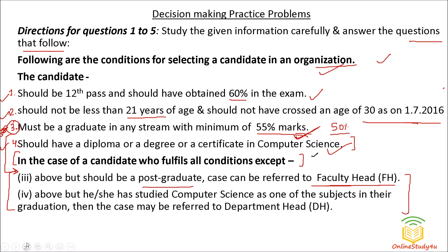Now, suppose a candidate satisfies conditions one, two, and three, but does not have a degree or certificate in computer science — that is condition four. However, if they studied computer science as one of their subjects in graduation, then the case may be referred to the department head. So the decision will be pending with the department head. This is how you have to take the decision.